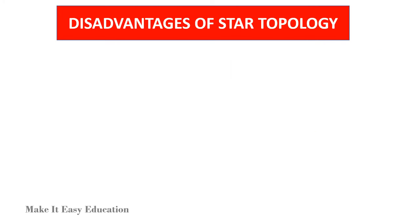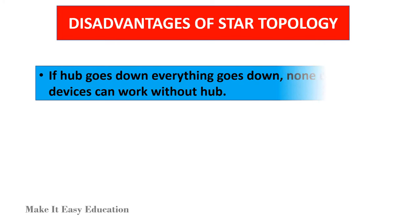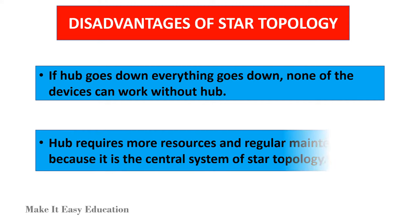Disadvantages of star topology: If the hub goes down, everything goes down — none of the devices can work without the hub. The hub requires more resources and regular maintenance because it is the central system of star topology.